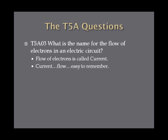What is the name for the flow of electrons in an electric circuit? The flow of electrons is called current. Current and flow are associated with each other, so it's easy to remember.